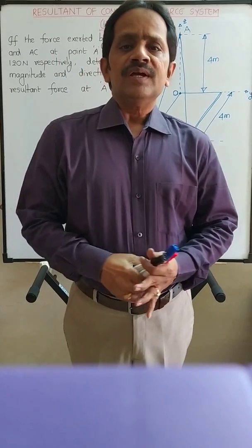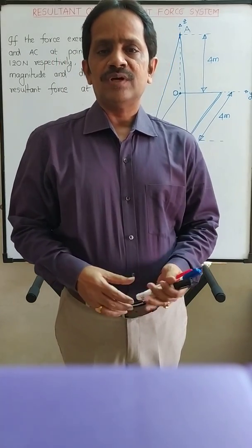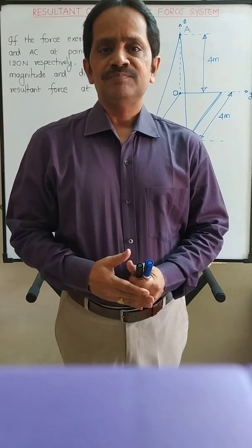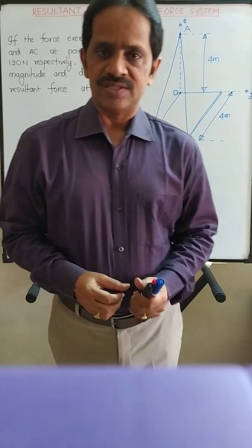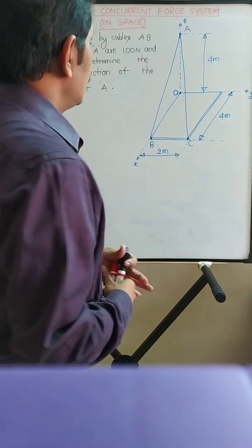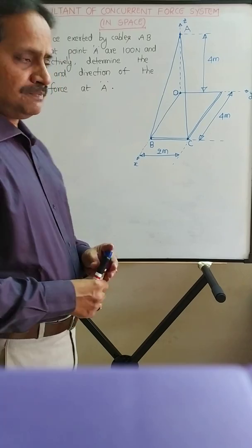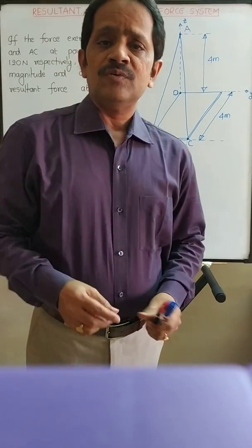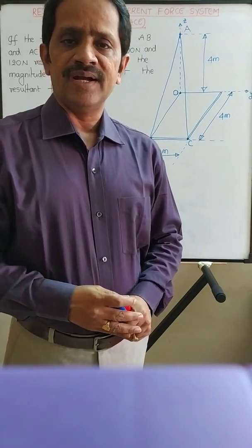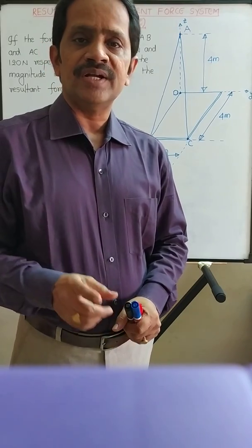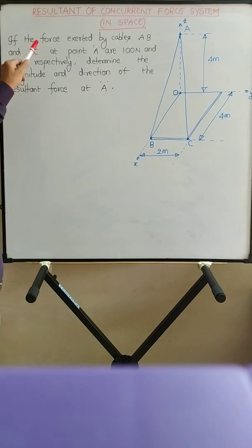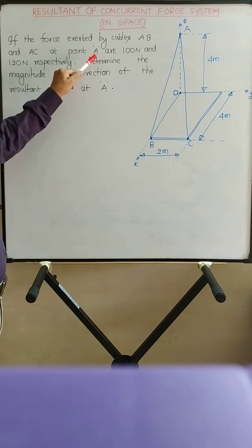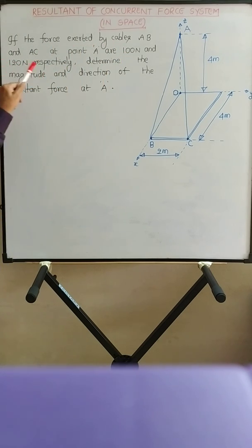Hello students. In this video we are going to solve a problem — an example on the resultant of a concurrent force system in space. Let us read the statement. I hope you are ready with a pen, notebook and calculator. If the force exerted by cables AB and AC at point A are 100 Newton and 120 Newton respectively,